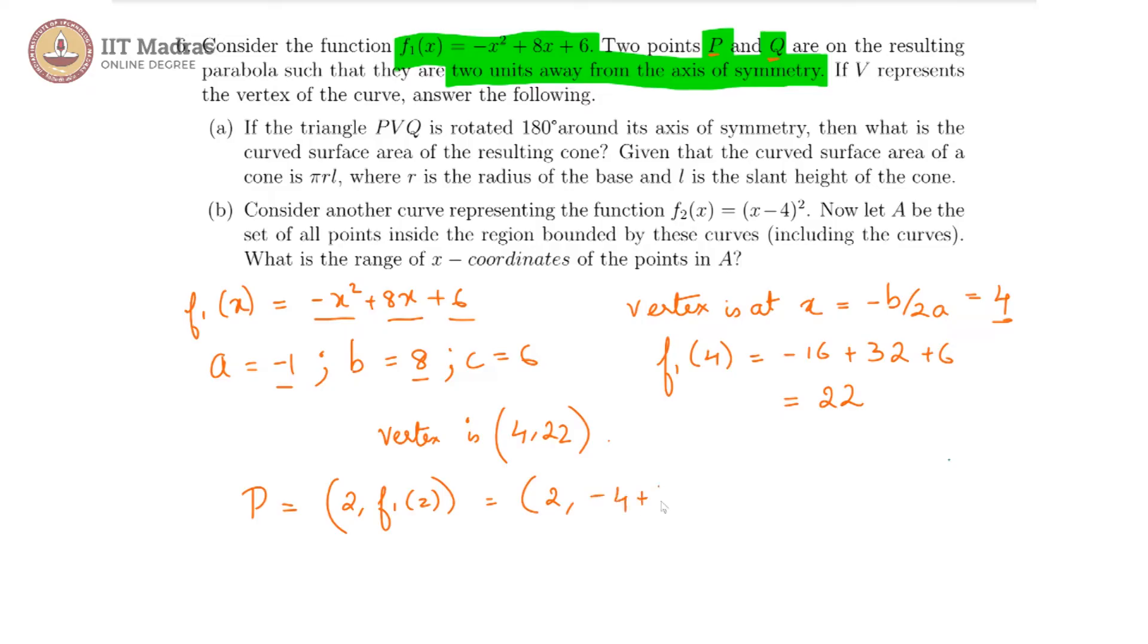Minus 4 plus 16 plus 6, which is basically 2 comma 18, and the point q is going to be 6 comma f1 of 6, and from symmetry we know that this is also going to be 18.